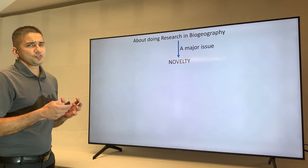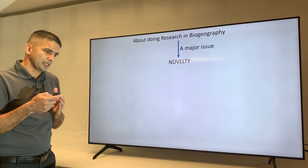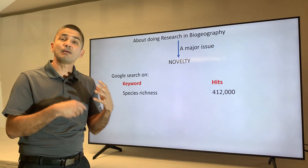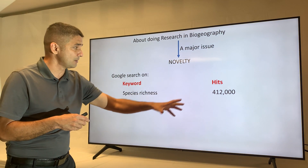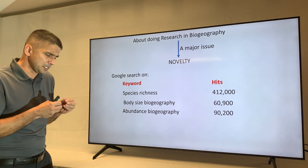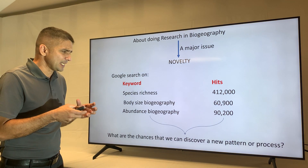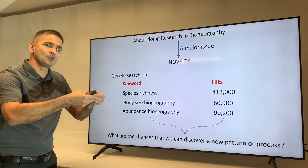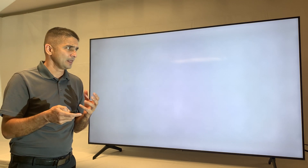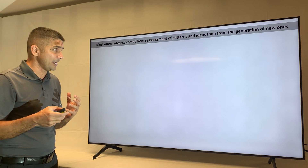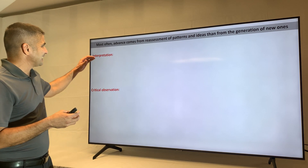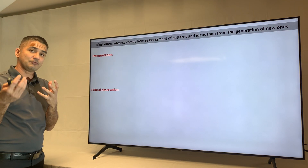Producing new research in biogeography has become much harder because of the issue of novelty. There are already over 400,000 papers on species richness, 60,000 on body size, and over 90,000 on abundance. This enormous existing literature makes it very hard to publish genuinely new insights. New papers today are often not describing new patterns or processes, but rather reinterpreting and critically observing what we already know.